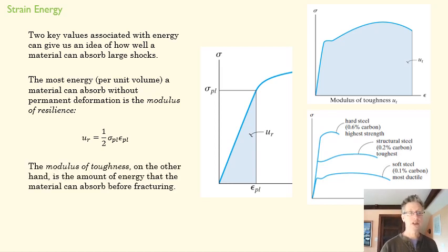And then the modulus of toughness tells us the area under this curve, all the way until fracture, tells us how much energy can be absorbed before that material is going to fracture. And so those become ways of describing the characteristics of a given metal or a given material.